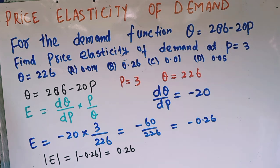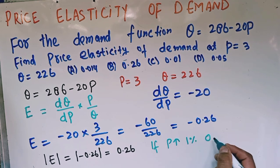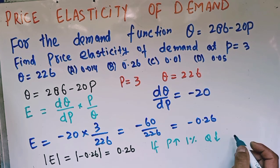How do we interpret it? It simply tells us if price increases by 1%, quantity demanded will decrease by 0.26%.